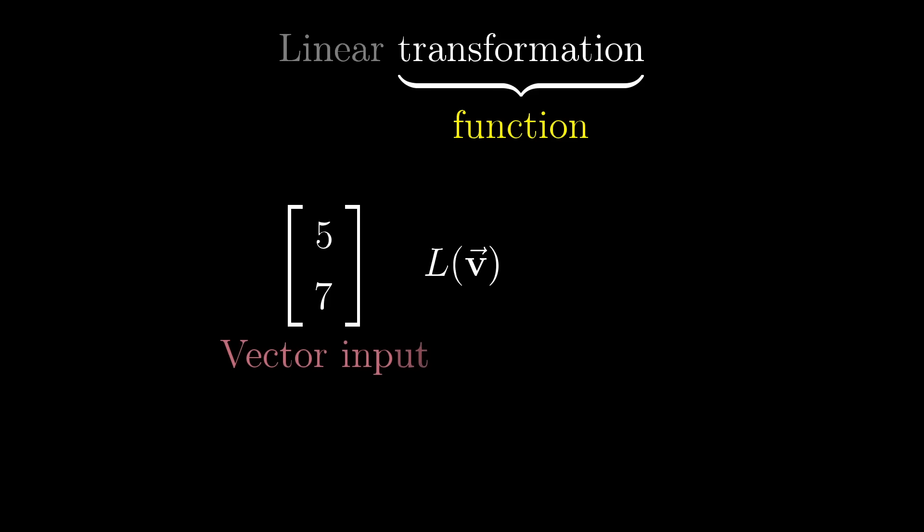To start, let's just parse this term: linear transformation. Transformation is essentially a fancy word for function. It's something that takes in inputs and spits out an output for each one. Specifically, in the context of linear algebra, we like to think about transformations that take in some vector and spit out another vector.